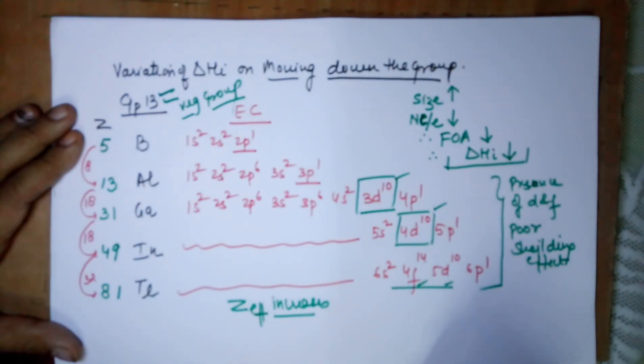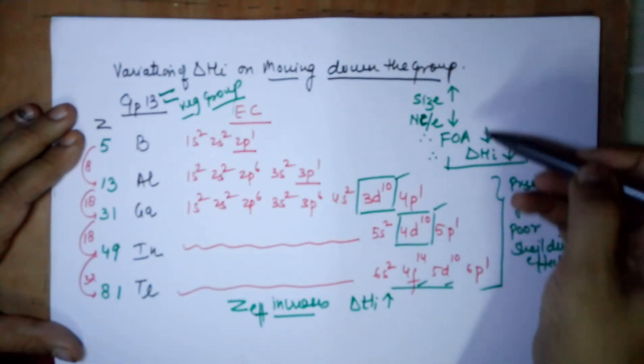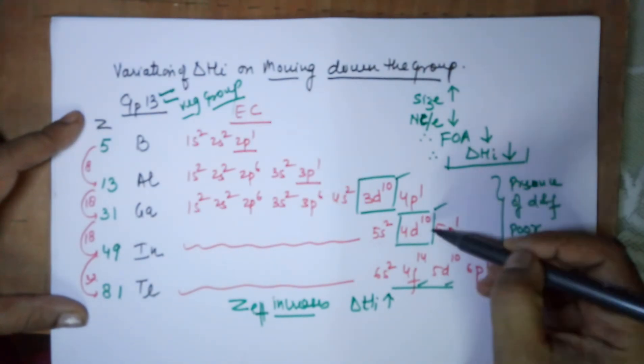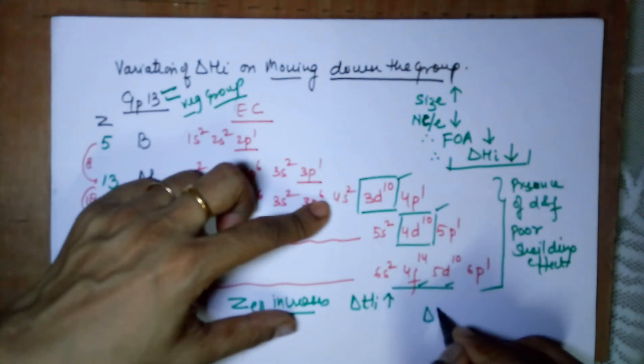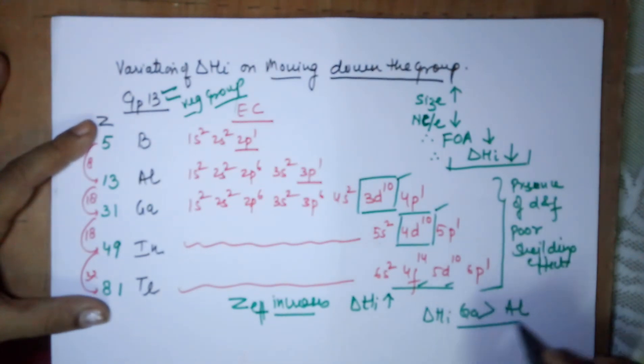If the effective nuclear charge is increasing, the electron removal becomes tough, so the ionization energy is expected to increase. But normally when moving down the group we expect that electron removal is going to be easier, but it does not become as easy as you go towards the last members. In fact, surprisingly, the ionization enthalpy of gallium and aluminum—it is ionization enthalpy of gallium which is higher than aluminum.